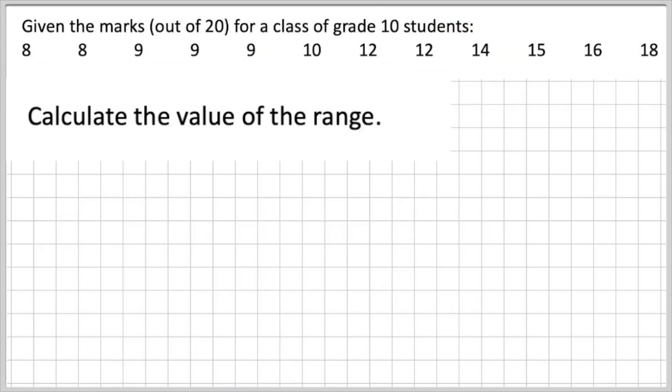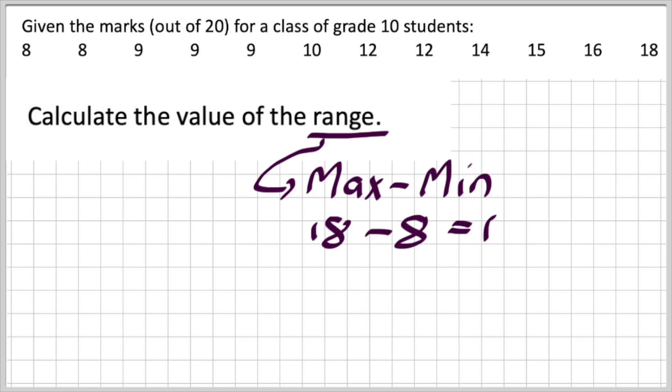Now the next question is, give me the value of the range. Now the value of the range is just the maximum minus the minimum. And therefore, 18 minus 8, which would give me 10.